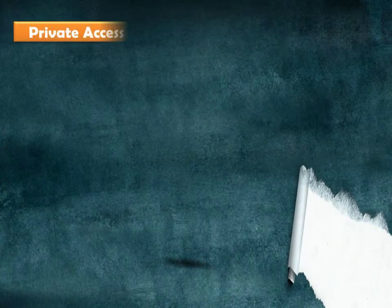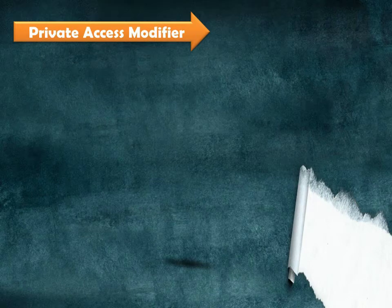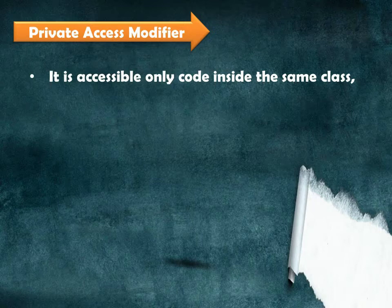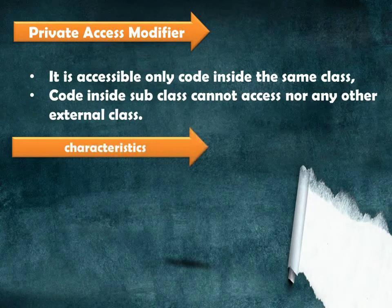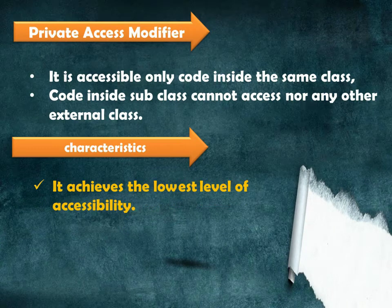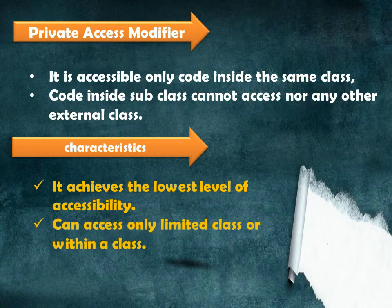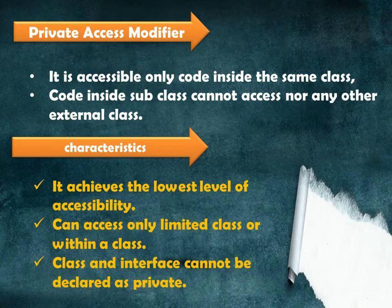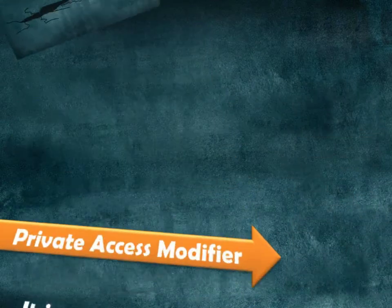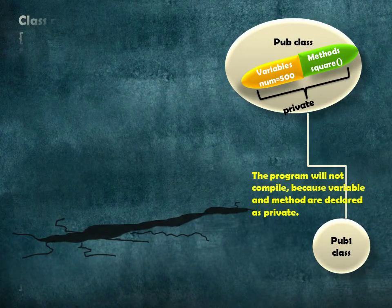Next, the private access modifier. If a method or variable is marked as private, then only code inside the same class can access the data member or call the method. Code inside the subclass cannot access the variable or method, nor can code from any external class. It achieves the lowest level of accessibility and the classes cannot be declared as private.